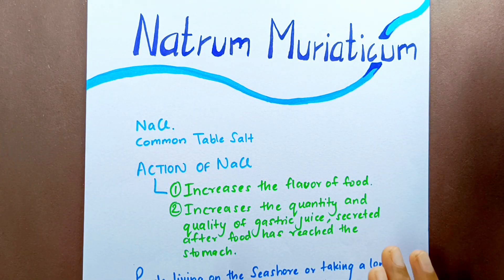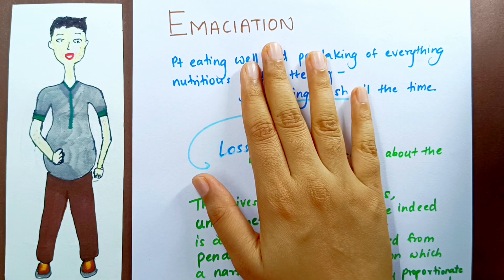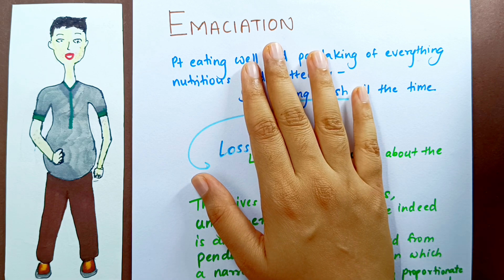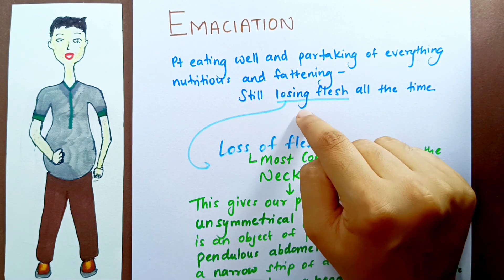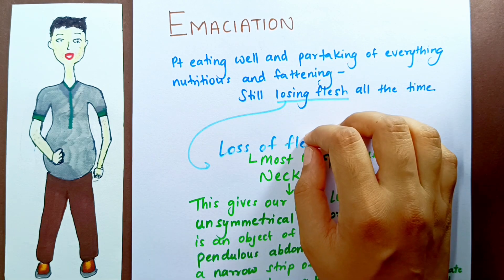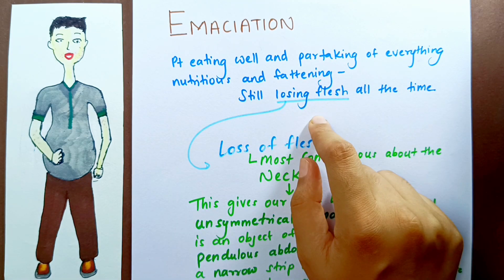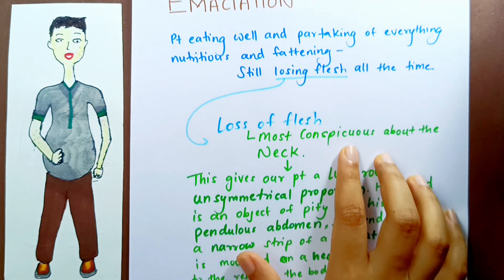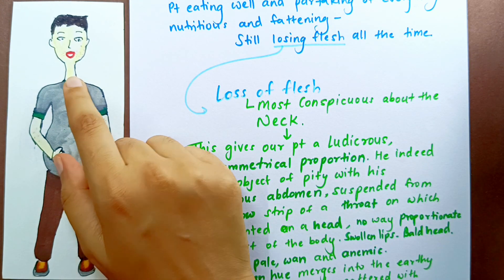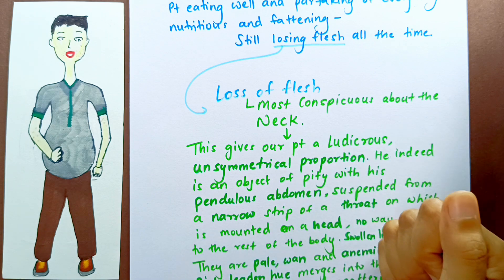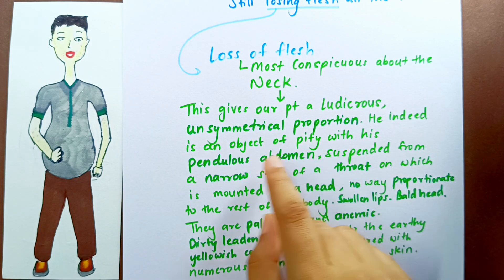Moving to the emaciation of this remedy — Natrium Muriaticum is very well known for emaciation. The patient is eating well, partaking of everything nutritious and fattening, and still loses flesh all the time. This loss of flesh is most conspicuous about the neck, which is very thin. This gives the patient a ludicrous, unsymmetrical proportion — an object of pity with a pendulous abdomen suspended from a narrow strip of throat, upon which is mounted a head in no way proportionate to the rest of the body.